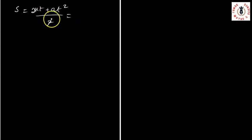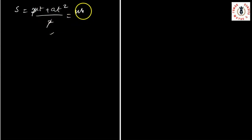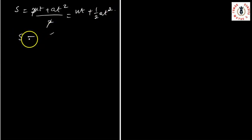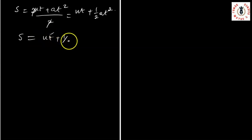Expanding this, we get S = (2UT + AT²) / 2, which simplifies to S = UT + ½AT². That's the second equation of motion.